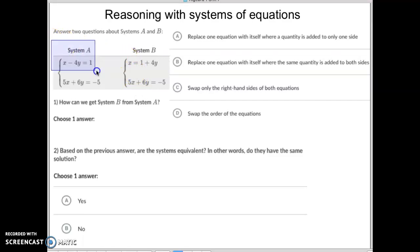Now, they have here system A, which are these two equations, and then they have system B, these two equations. What they're looking for is how can you get from system B from system A? So what do they do to get from here to here?